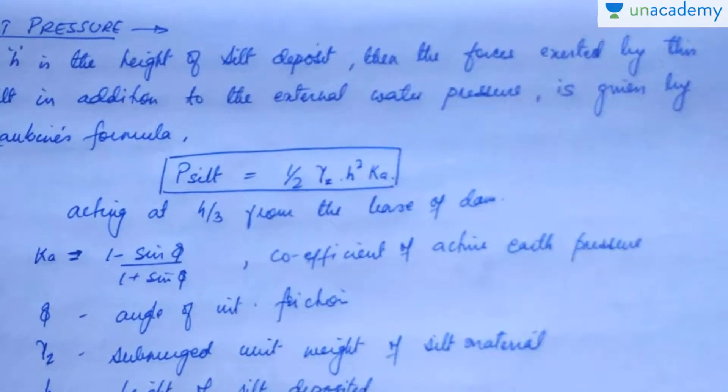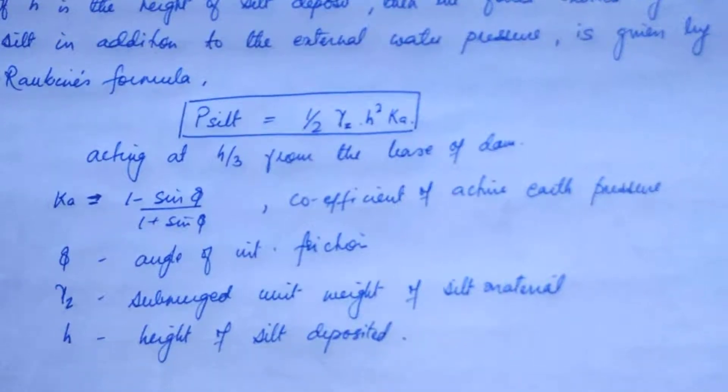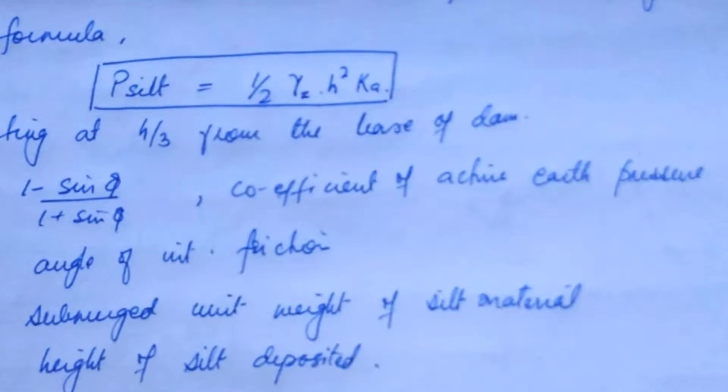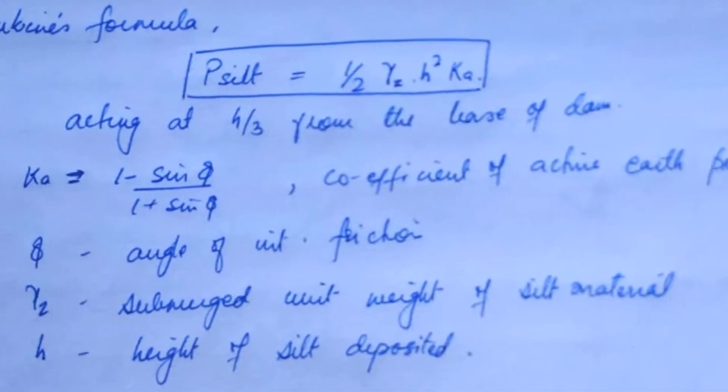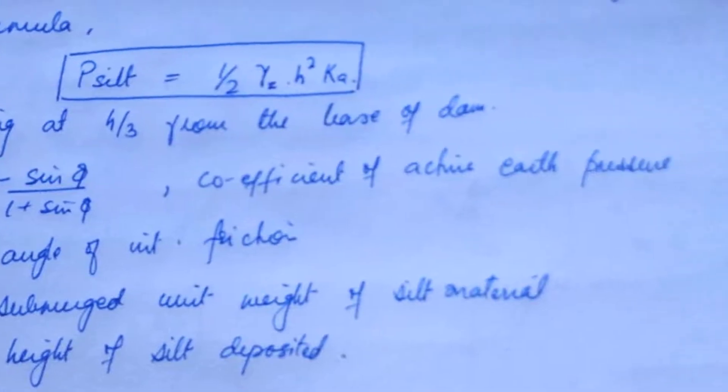Now, the forces exerted by the silt in addition to the external water pressure is given by Rankine's formula. I hope you remember the Rankine's formula. The pressure because of silt is actually equal to half gamma h square ka, acting at a height of h by 3 from the base of dam. What is ka here? ka is equal to 1 minus sine phi upon 1 plus sine phi, the coefficient of active earth pressure.